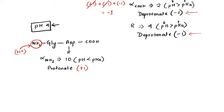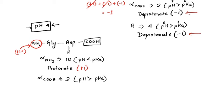Next, the alpha carboxylic group has a pKa of 2. The pH at which we're subjecting the dipeptide is 4, which is greater than the pKa of 2, so this group would release a hydrogen ion and be deprotonated, giving a charge of −1.